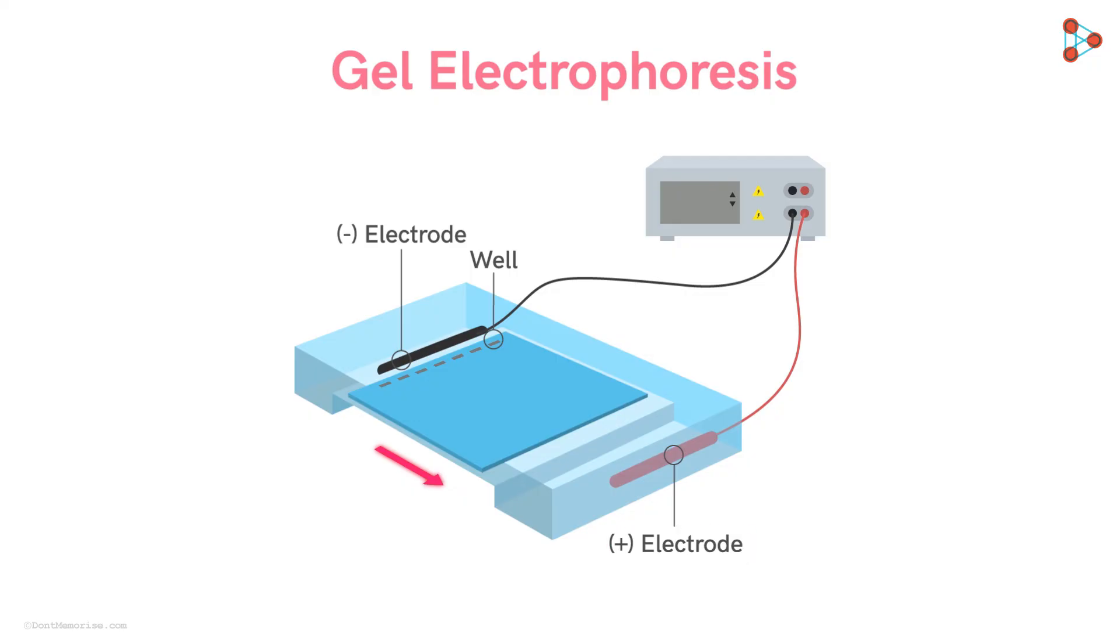This movement of the DNA molecule will be promoted by the electric field. But we cannot track the movement of the DNA in the gel as it's colorless. For this, we use a colored loading dye to track the movement of the DNA. The mixture of the DNA samples with the colored loading dye is now all set to get into the gel.